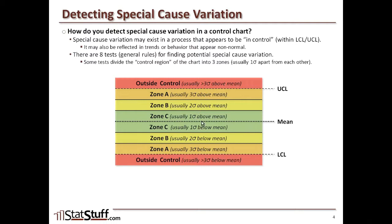Zone B is the region that falls two standard deviations above or below the mean. And Zone A reflects the area that is three standard deviations above or below the mean.